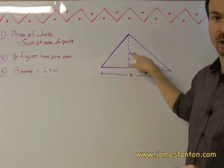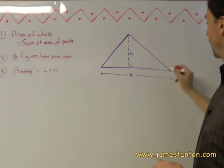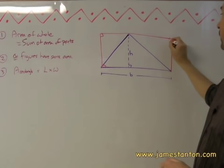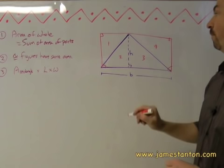So I claim from those three principles we can logically introduce the formula for the area of a triangle. Most people call the base of the triangle B, the height H, and everyone knows the formula area equals half base times height, but here's how it follows logically. Everyone's probably thinking, put this triangle in a rectangle, which I can do as follows.